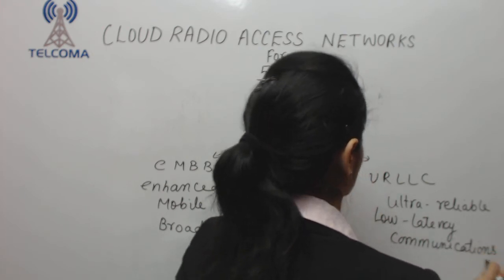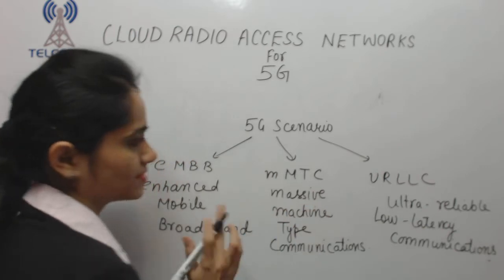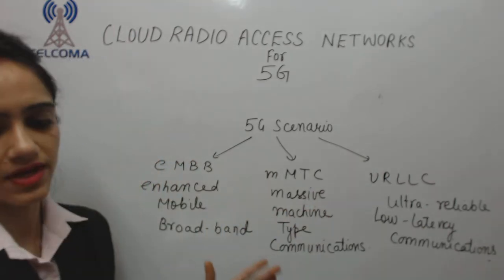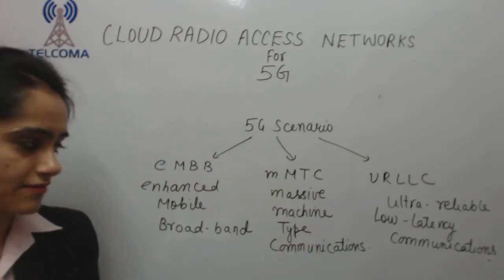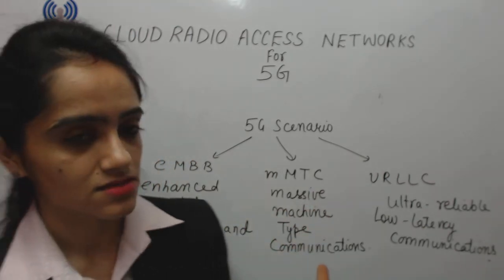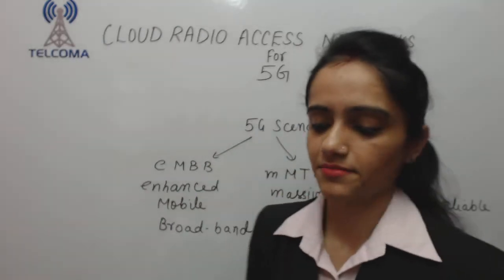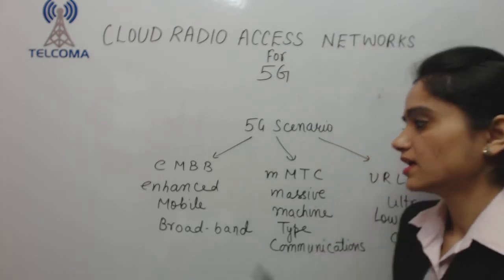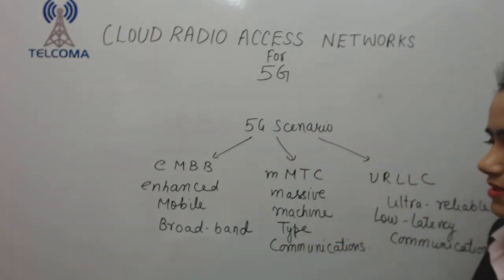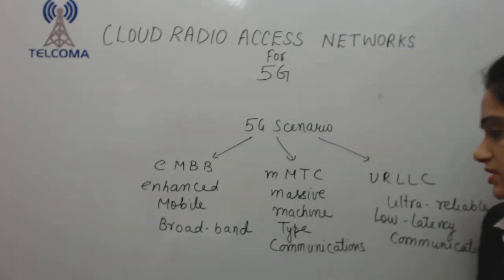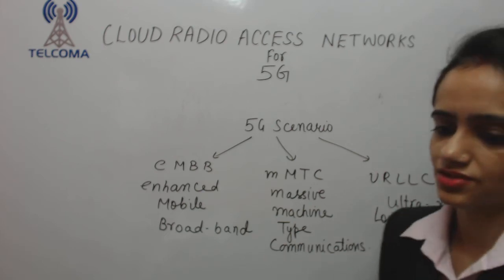So the complete 5G scenario is divided into three categories: Enhanced Mobile Broadband (eMBB), Massive Machine Type Communication (mMTC), and Ultra Reliable Low Latency Communications (URLLC).